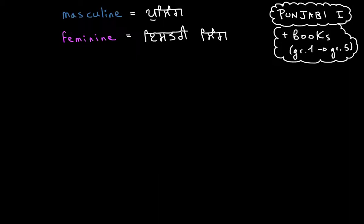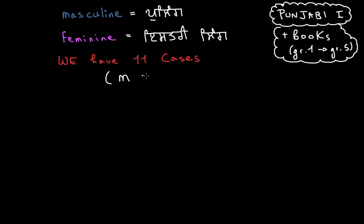We're going to talk about 11 different formations of gender within Punjabi grammar. I'm going to use a chemistry-style reaction formula to teach this — using reaction formulae to denote the different cases. We have 11 cases of gender formation, either going from male to female or from female to male. I'll abbreviate these to M and F.